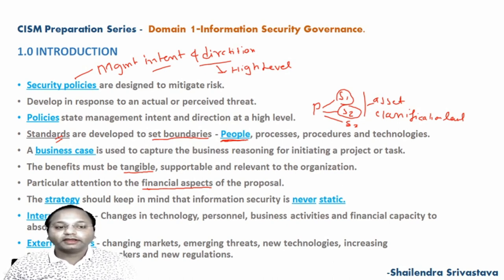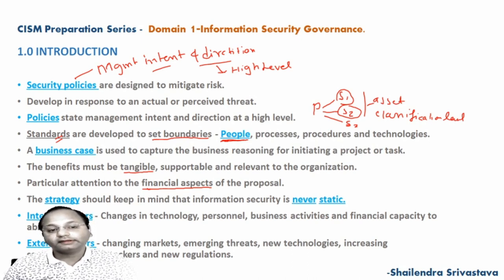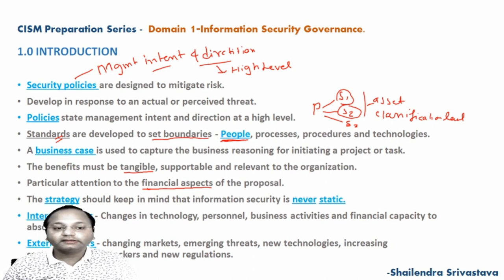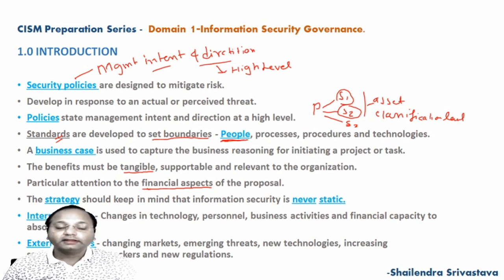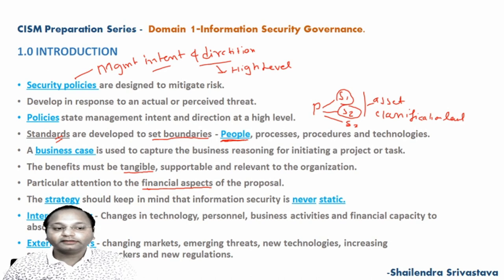The strategy should keep in mind that information security is never static. There are certain factors to always consider. Internal factors include changing technologies, personnel, business activities, and financial capacity to absorb loss. External factors include changing markets, emerging threats, new technologies, increasing sophistication of attackers, and new regulations. Risk and impact assessments are often a good indicator of changes that may need to be made to strategy elements.